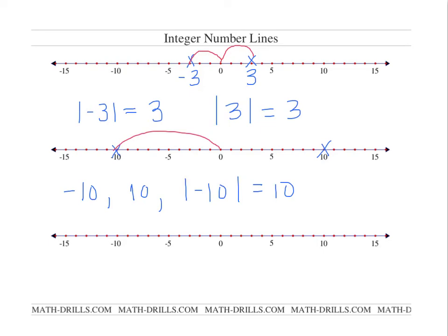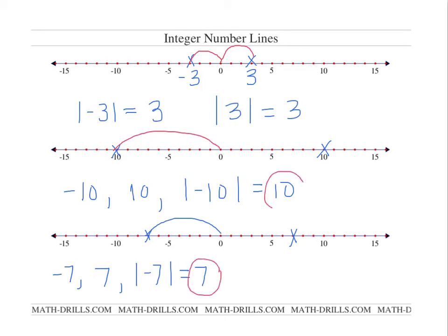Let's have you try one. What would this number be on the number line? That number is negative 7. What is the opposite of negative 7? The opposite of negative 7 would be positive 7. And lastly, what is the absolute value of negative 7? The absolute value of negative 7 is 7, because the distance is 7 spaces. Have you noticed that the absolute value is always positive?